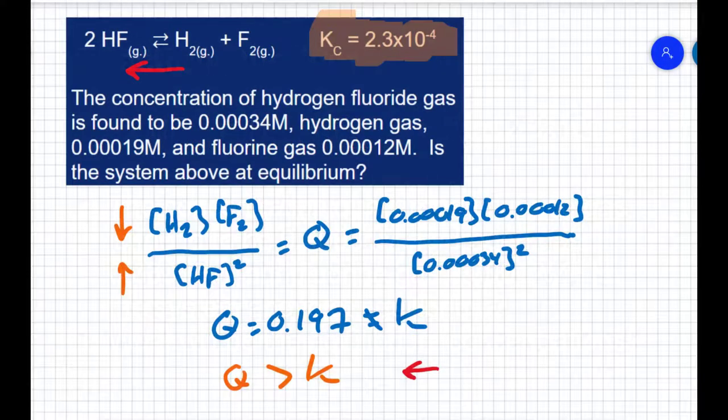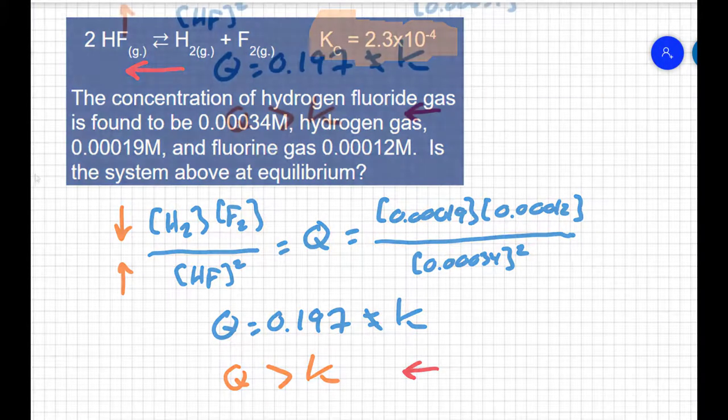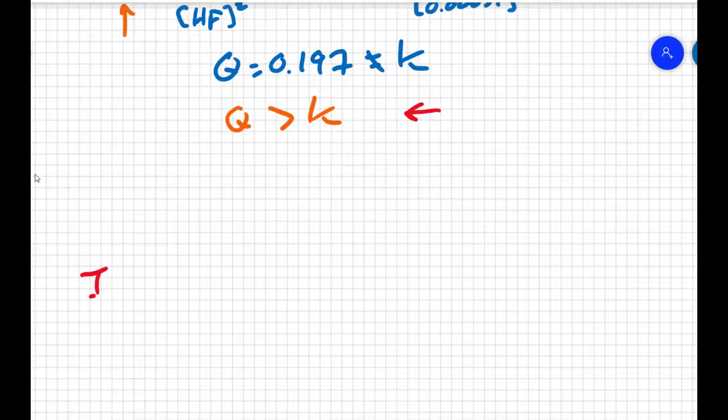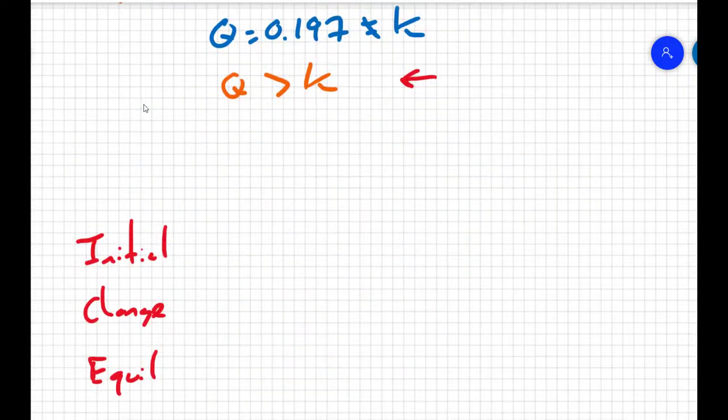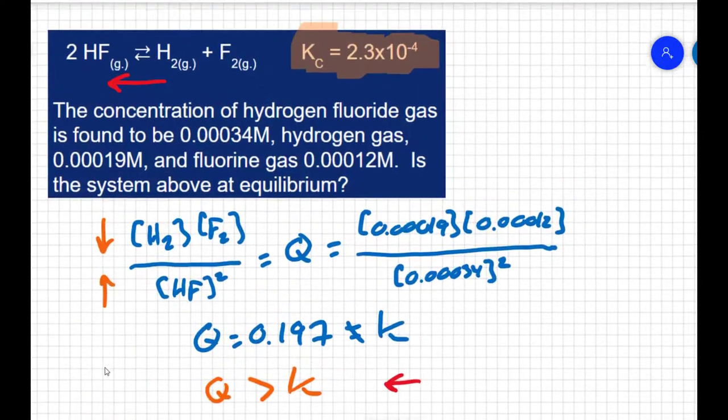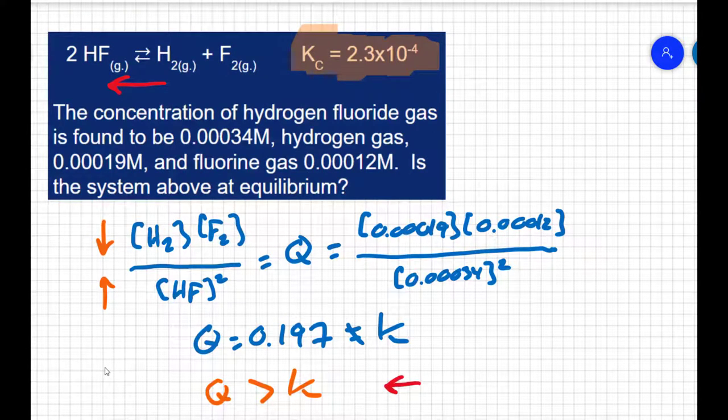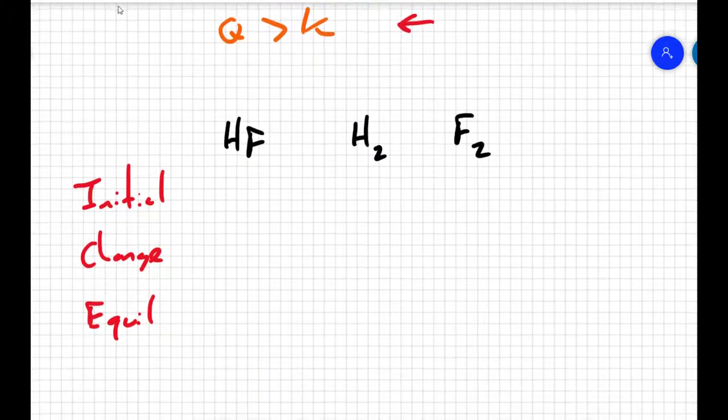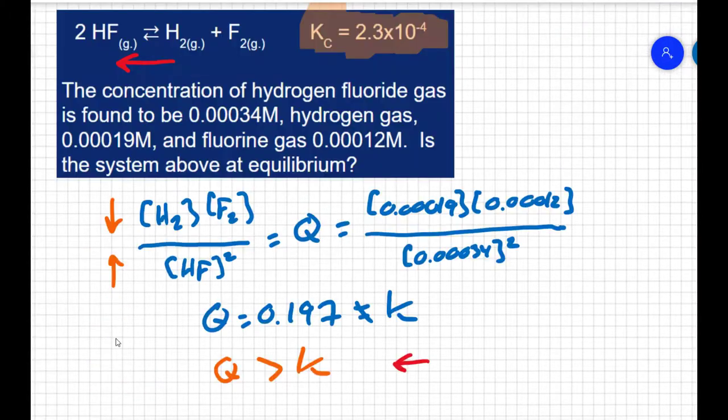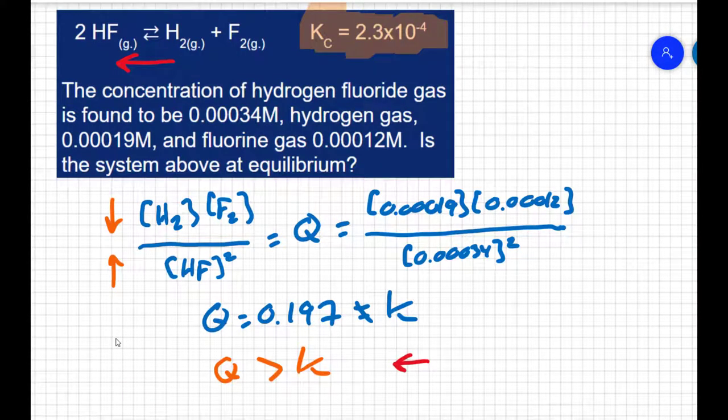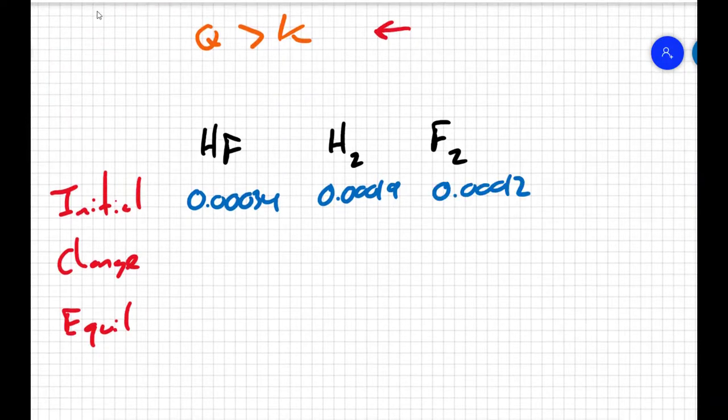So what we can do now is we can set up an ICE chart. ICE is an acronym that means initial, change, and equilibrium. We can use the ICE chart to track what's happening to the concentration of all my gases during the reaction. I can look at the HF, the H2, and the F2 through this process. Now I know the HF is starting out with a concentration of 0.00034. I know the hydrogen is starting out with a concentration of 0.00019. And I know the fluorine is starting out with a concentration of 0.00012. So those are the initial concentrations.